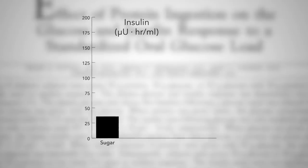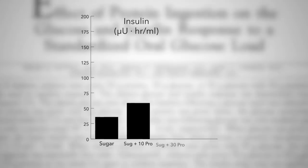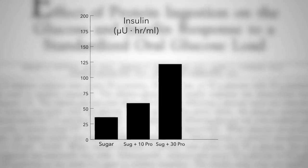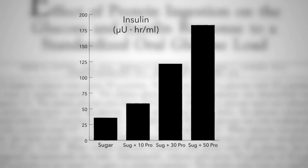And the more meat you add, the worse it gets. Just adding a little meat to carbs doesn't seem to do much, but once you get up to like a third of a chicken breast's worth, you can elicit a significantly increased surge of insulin.